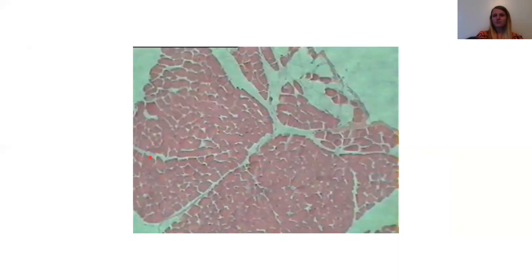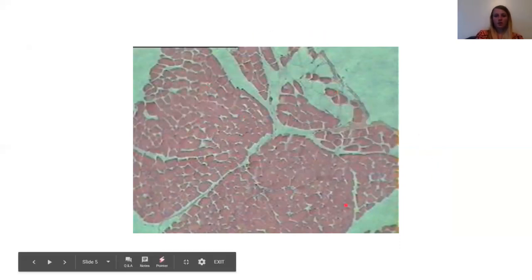Bundles are going to be your fascicles, and the perimysium is around that. If you look really closely, you can see these individual cells. Around those is going to be your endomysium, and then around all of it would be your epimysium. This is kind of a difficult slide, but if you can orient yourself with these fascicles, it helps a little bit.